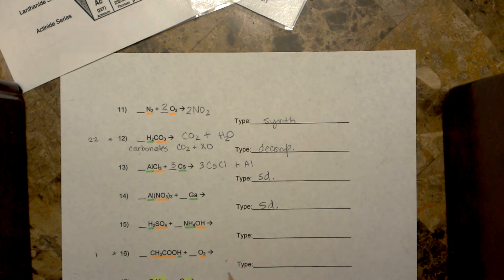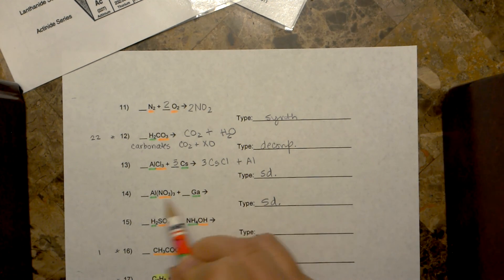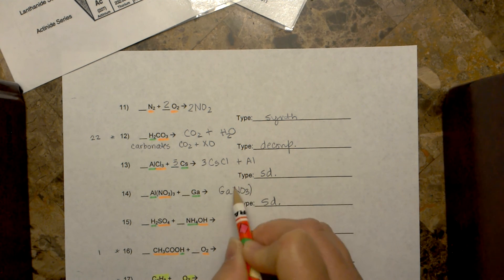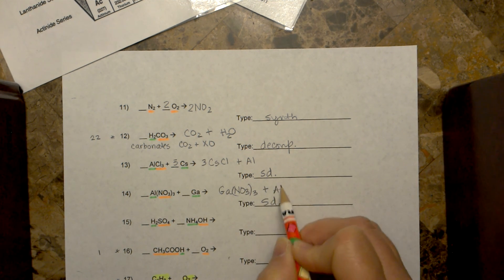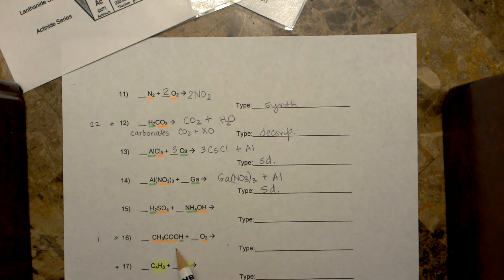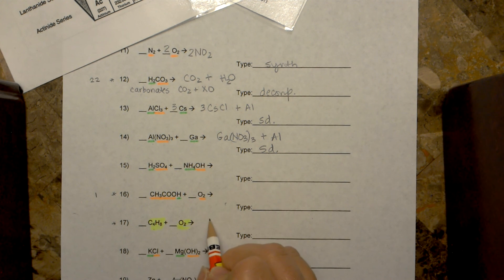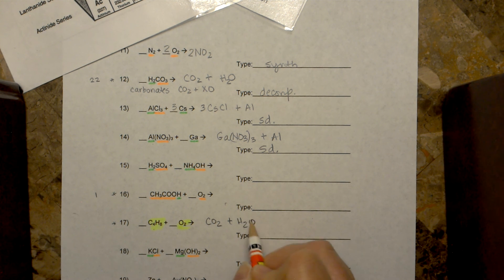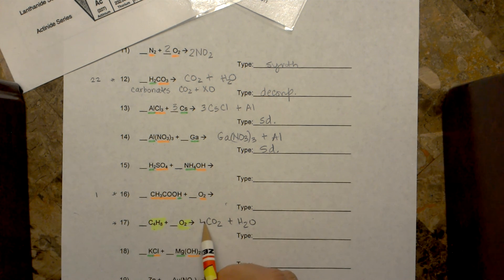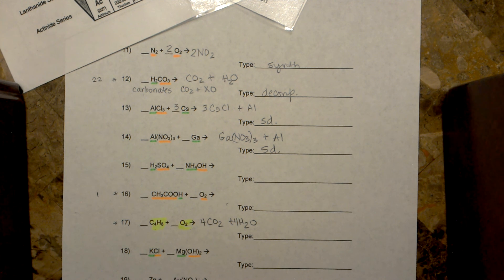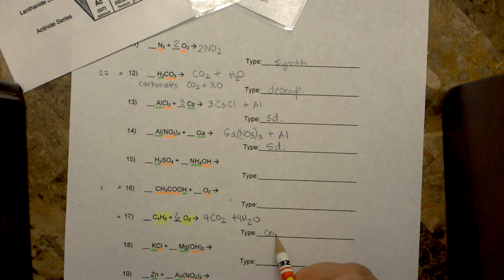This is another single displacement reaction — gallium and aluminum switch places. So you have gallium nitrate, and it happens to be a plus three as well, and then you have aluminum. So you don't need to balance anymore. Let me skip down to number 17 — it's the first combustion reaction we've had. It's a hydrocarbon with oxygen, so you always make carbon dioxide and water. Then you'll have to balance your reaction: four carbons, eight hydrogens — so there's going to be a four in front of the water, and then you need six oxygens. This is a combustion reaction.